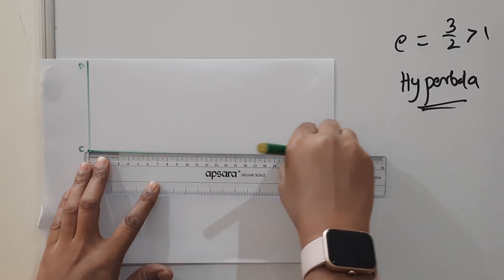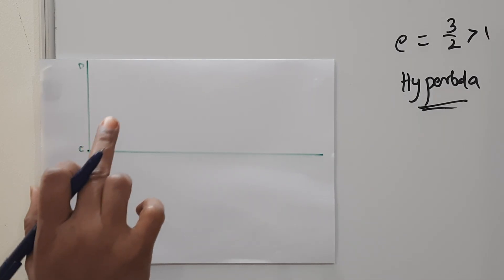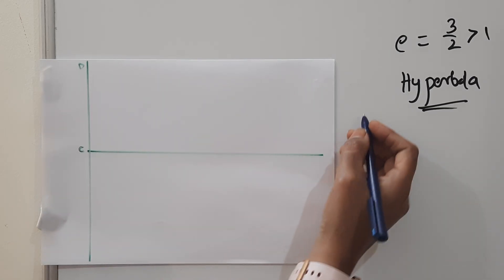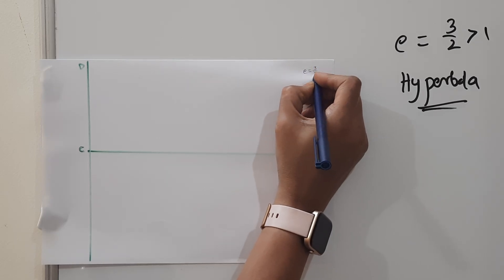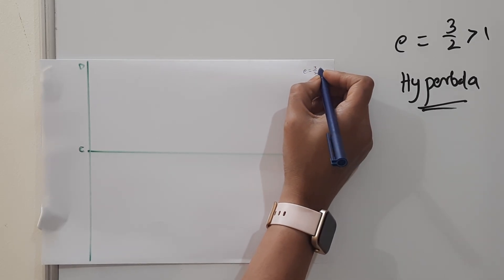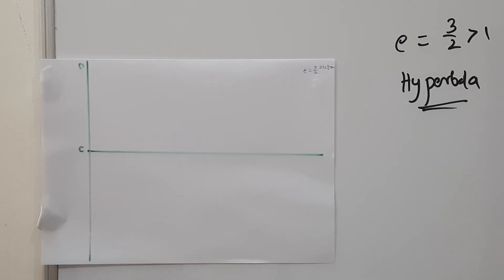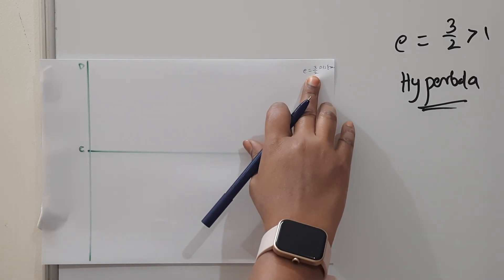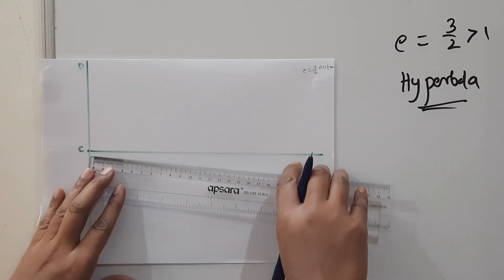Let's see how we place the focus here. Now, what I want to do is work with 3 by 2. That means e equals 3 by 2 — the distance from focus corresponds to 3 and the distance from directrix corresponds to 2. First of all, you need 50 mm, which is 5 centimeters.